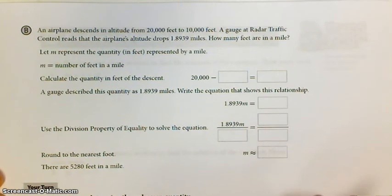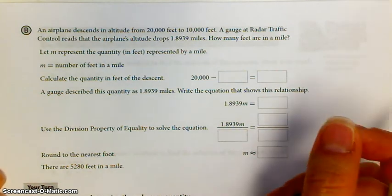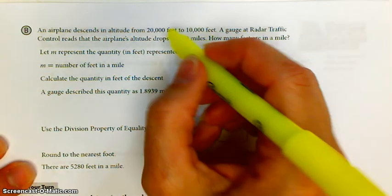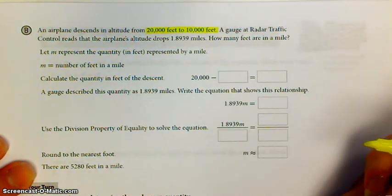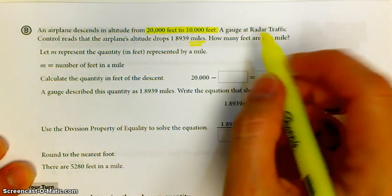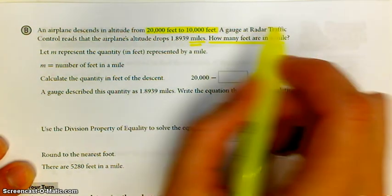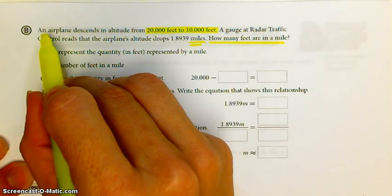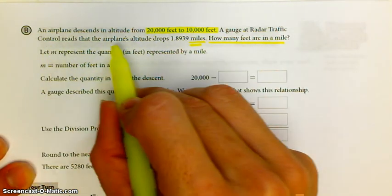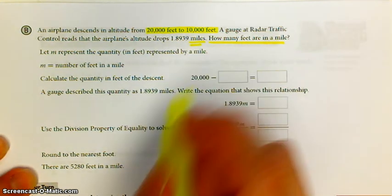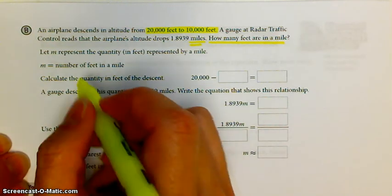Here's another example. An airplane descends in altitude from 20,000 to 10,000 feet. A gauge at radar traffic control reads that the airplane's altitude drops 1.8939 miles. How many feet is in a mile? We've dropped from 20,000 to 10,000 feet, and radar traffic control says that that's equivalent to 1.8939 miles.